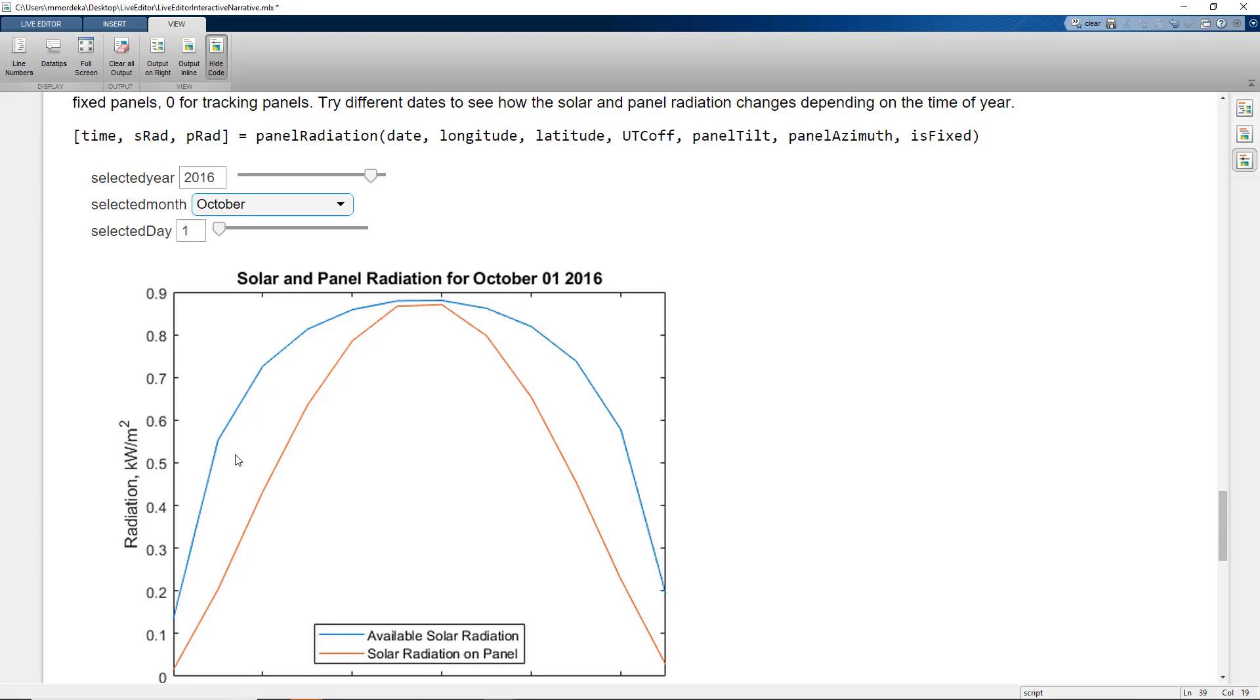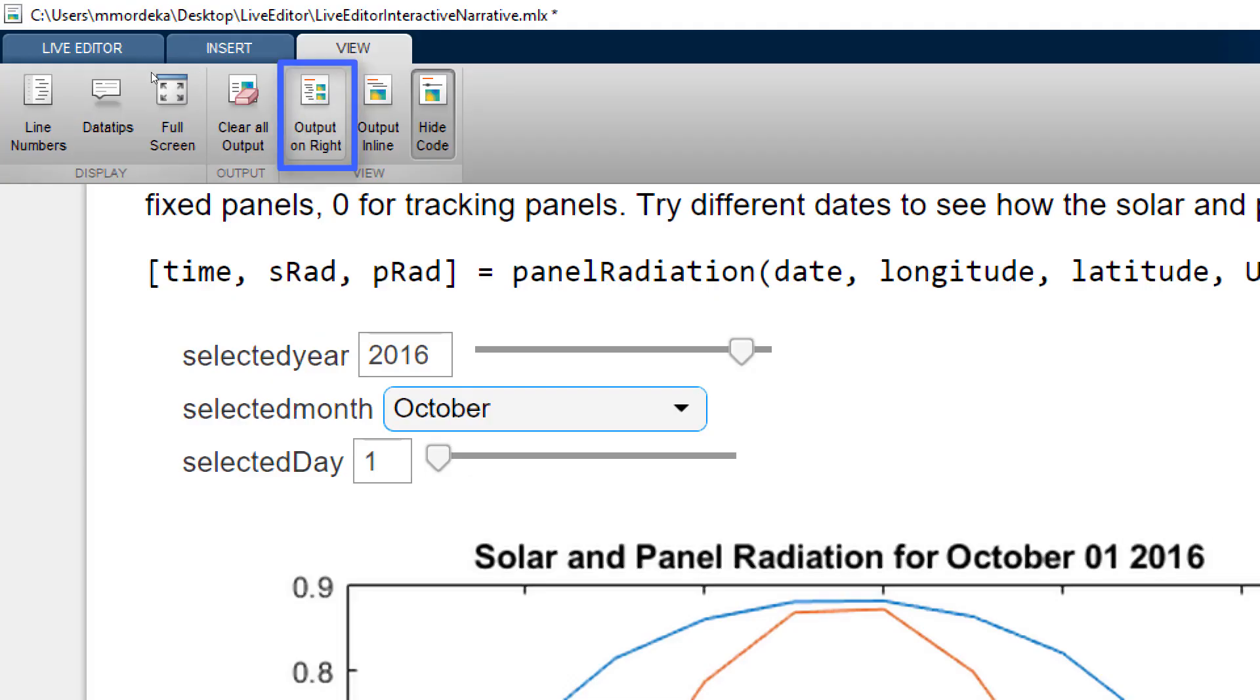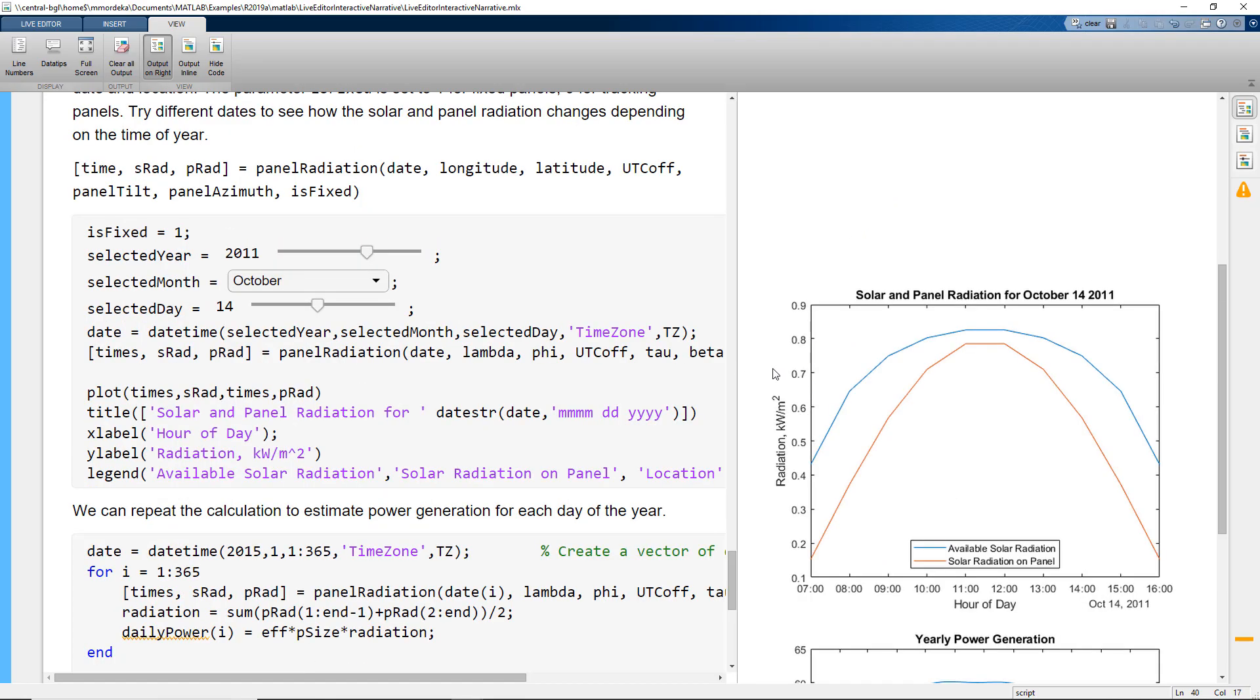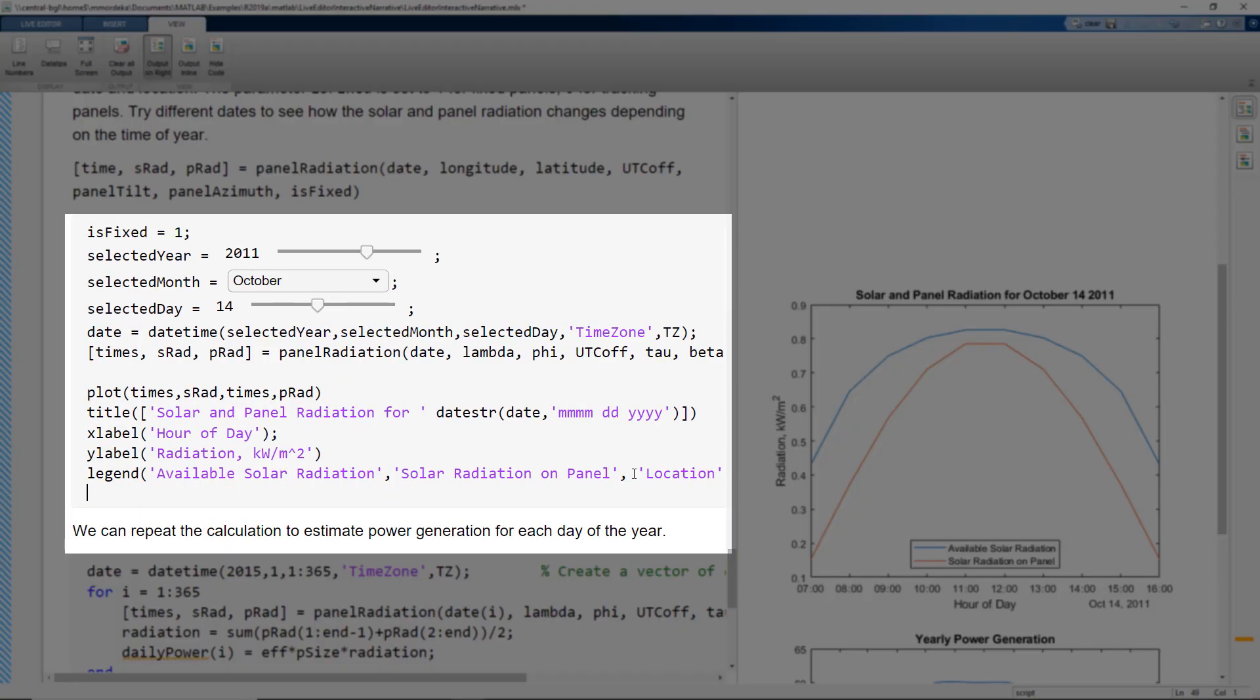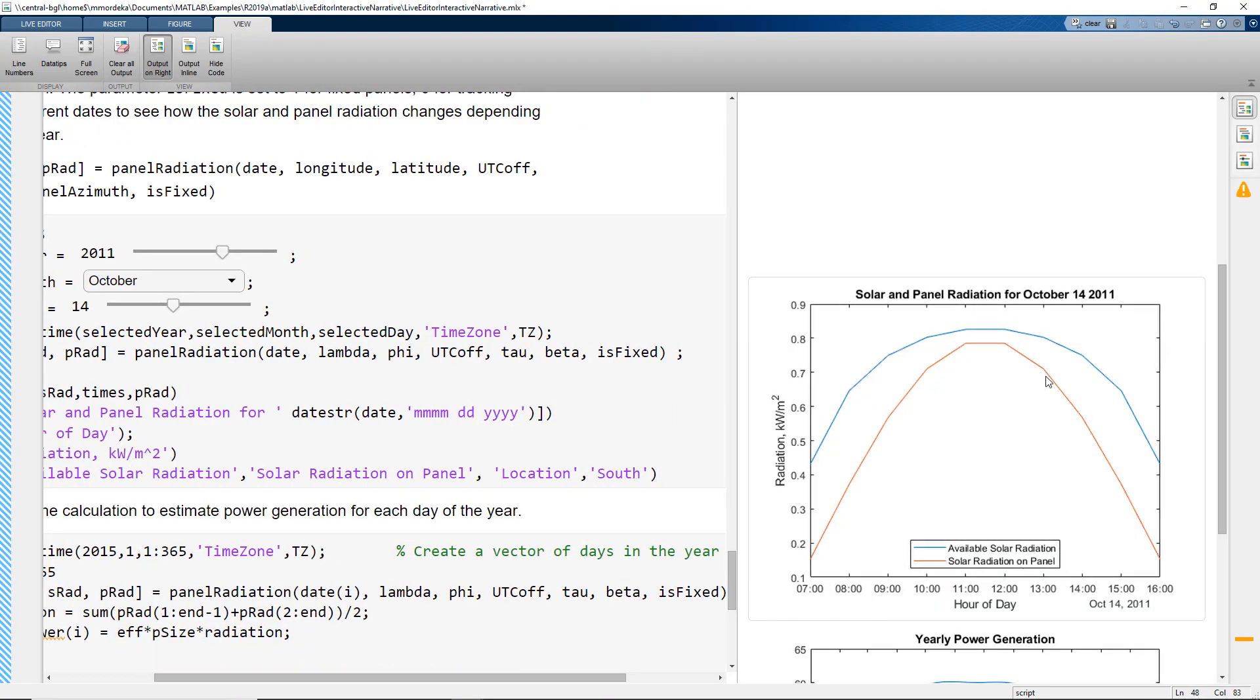For a comfortable view in the next calculation, we'll change the view to output on the right. Now, what if we need to add grids to the plot that we have? Generally, we would go into the MATLAB code and write the command 'grid on' to enable the grids on the figure, but things become much easier for us in Live Script.